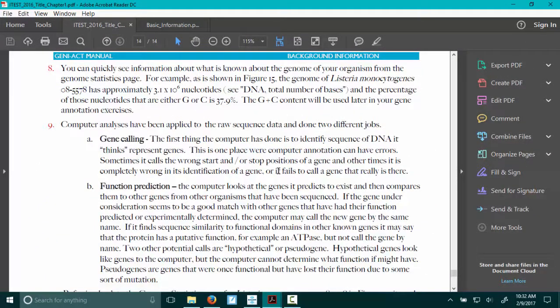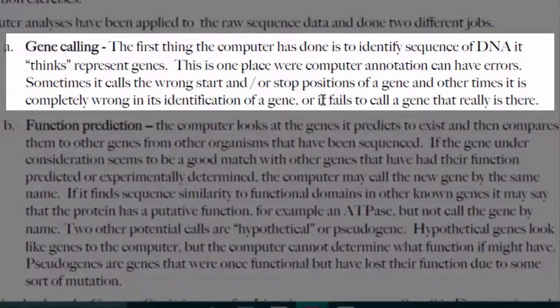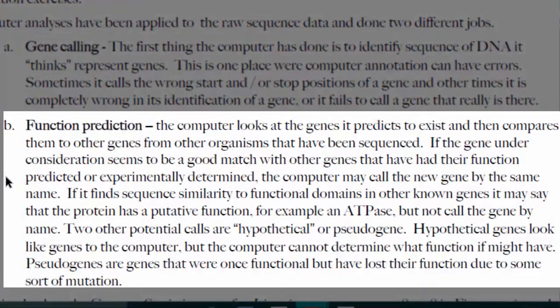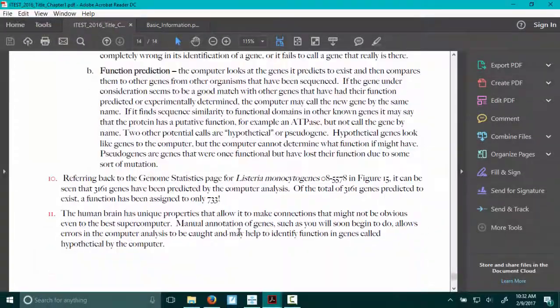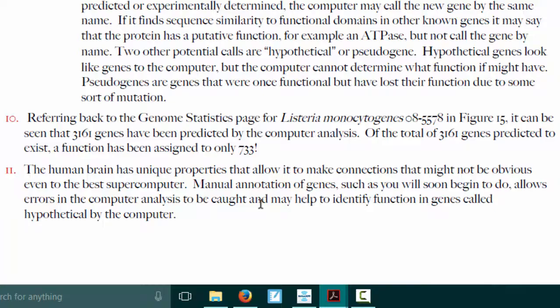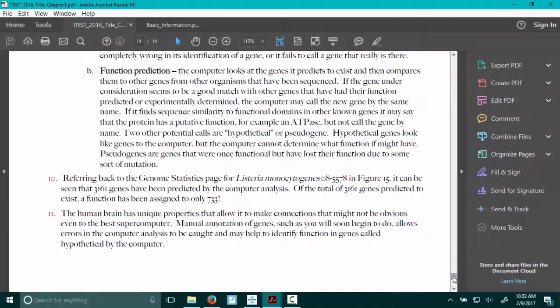The computer has gone through the whole genome sequence for Clostridium botulinum and called the gene right here. All it does is identify what it thinks might be a gene and number it. The computer can be completely wrong — it can call something a gene that isn't there, or miss a gene that really is there because it got confused. It also does a basic function prediction, but it's not always right. Our annotation can prove the computer wrong, and that's not necessarily rare. Computers are not sophisticated enough even today to do this part very well. The human brain has unique properties that let us see connections that a computer can't be programmed to make yet.